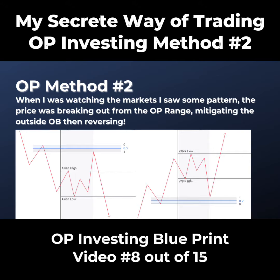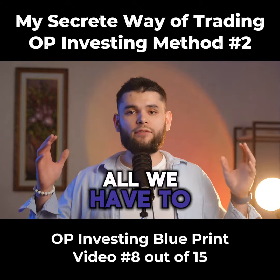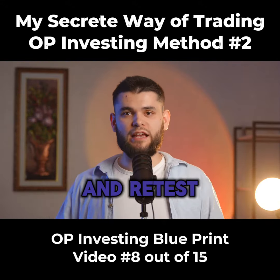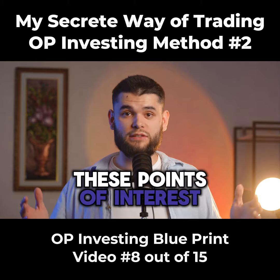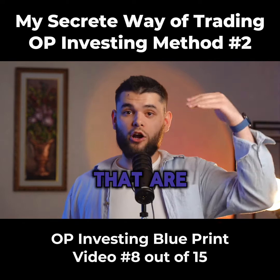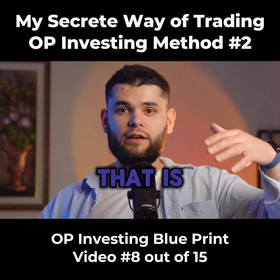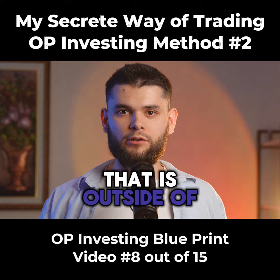All we have to do is wait for the price to break out and retest these points of interest that are outside of our range. Here are some examples of how this trade actually works. We just place our trades on those levels and wait for the retest and reversal. The stop loss should be beyond our level that is outside of our range.